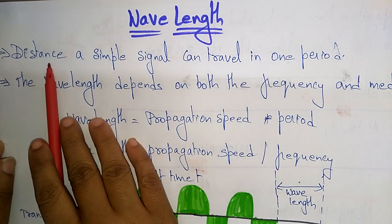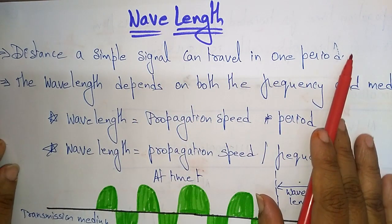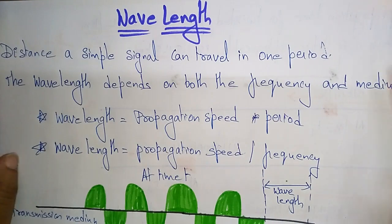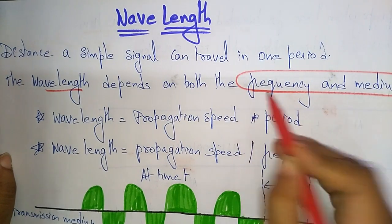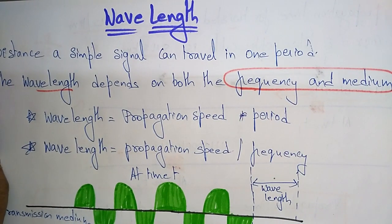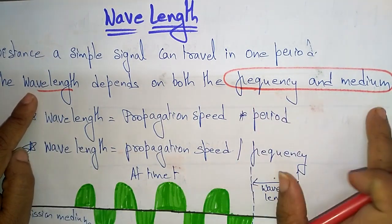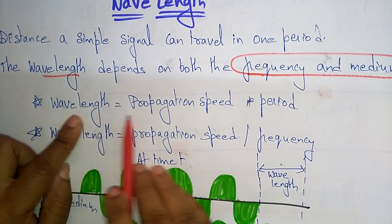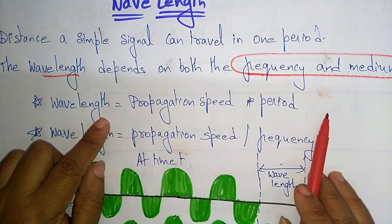The wavelength is the distance a simple signal can travel in one period. The wavelength depends on both the frequency and the medium — what type of transmission media you have taken and what is its frequency. The formula is: wavelength is equal to propagation speed multiplied by period.